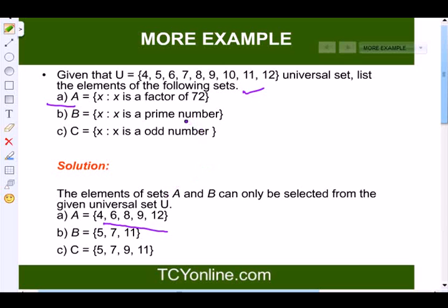Now the next part says that B is a set where X is a prime number. So we know that the prime numbers are the numbers which is divisible by 1 and itself. So over here the prime numbers are {5, 7, 11}. So set B can be written like this. Now set C says that X should be an odd number. So we will write down all the odd numbers together and we get this as the set C.